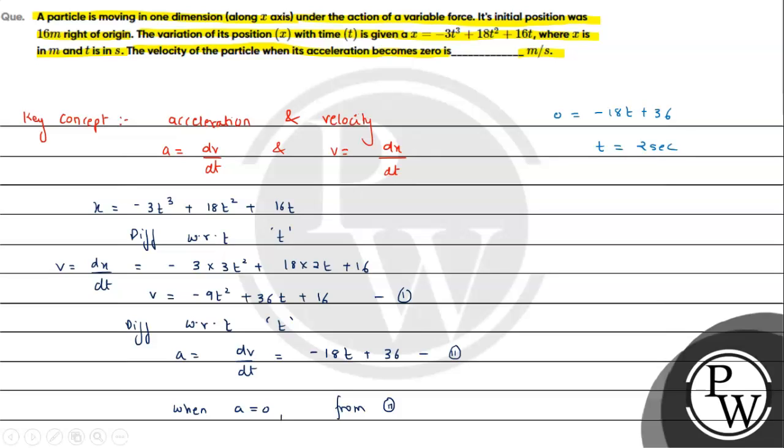So the t value will be 2 seconds, and in 2 seconds the acceleration will be zero. Now in that 2 seconds we will check the velocity value. So we can say from equation 1, velocity will be equal to minus 9 into 2 squared plus 36 into 2 plus 16.